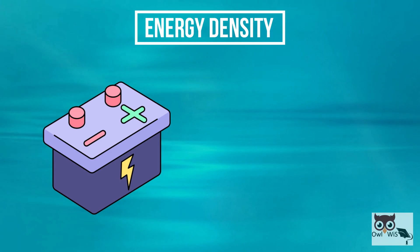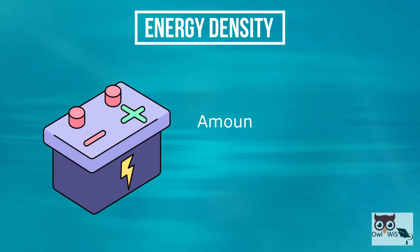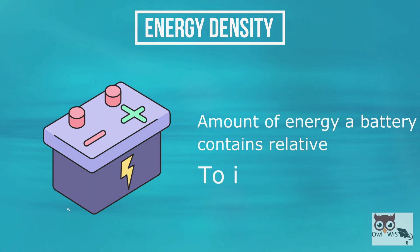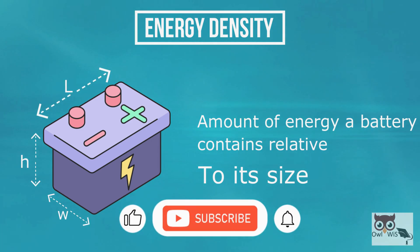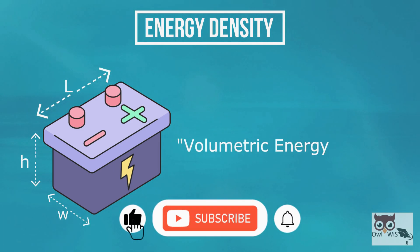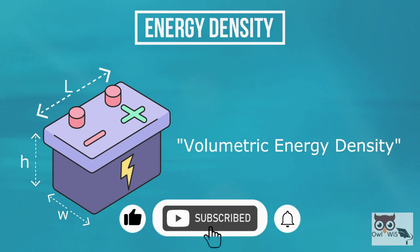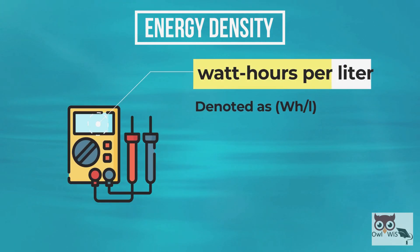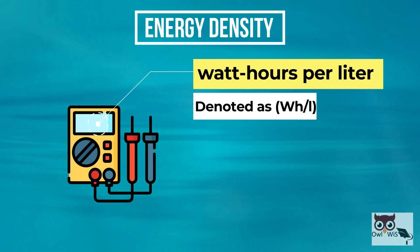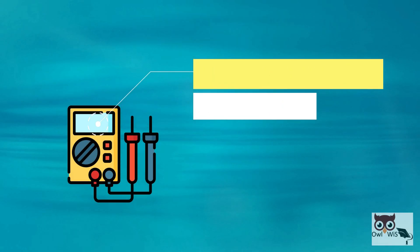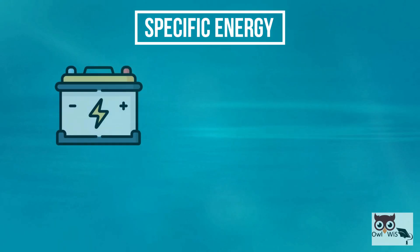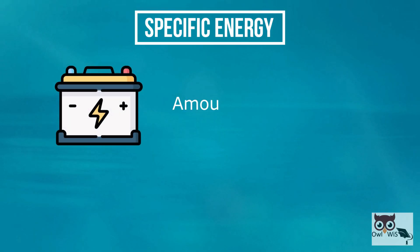Energy density is the amount of energy a battery contains relative to its size, known as volumetric energy density. Energy density is typically measured in watt hours per liter.